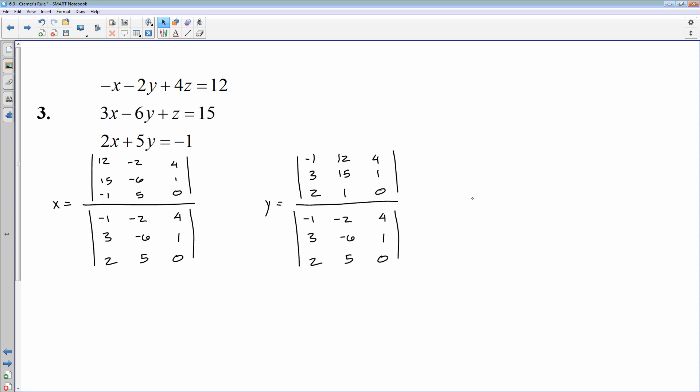And then for Z, so we have the bottom one still being the same, the numerator. Now I'm solving for Z, so 12, 15, and 1 will replace the last column. 12, 15, 1, and then we'll keep all the others the same. Negative 1, 3, 2, negative 2, negative 6, 5.